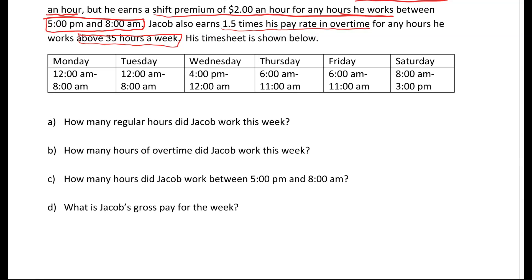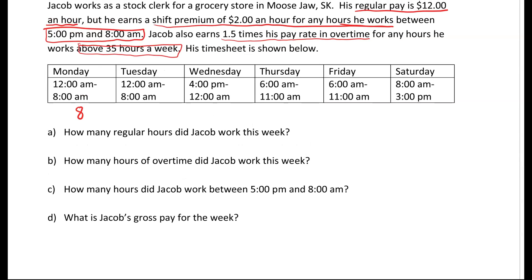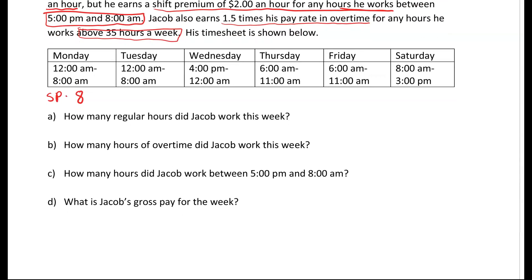Let's break down these days. Monday: works 12 a.m. to 8 a.m. — that's 8 hours, and it falls within the shift premium window of after 5 p.m. and before 8 a.m., so those are 8 shift premium hours. Tuesday: 12 a.m. to 8 a.m. — again 8 shift premium hours. Wednesday: works 4 p.m. to 12 a.m. The shift premium starts at 5 p.m., so there is 1 regular hour from 4 p.m. to 5 p.m., and then 7 shift premium hours from 5 p.m. to 12 a.m.